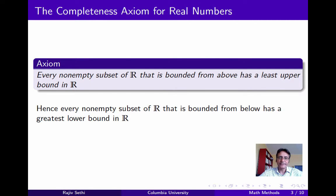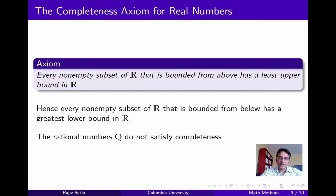This implies, as a direct consequence of a theorem already proved, that every non-empty subset of R that's bounded from below has a greatest lower bound in R. We also know from an earlier segment that the rational numbers do not satisfy the least upper bound property, and hence don't satisfy the completeness axiom.